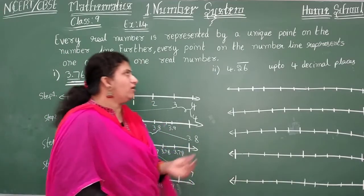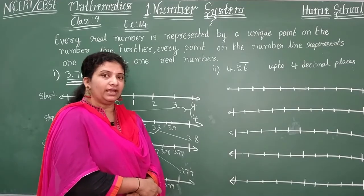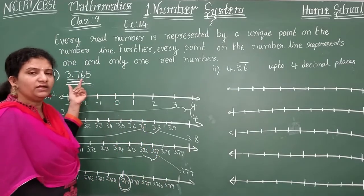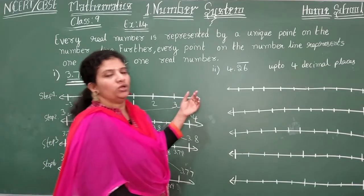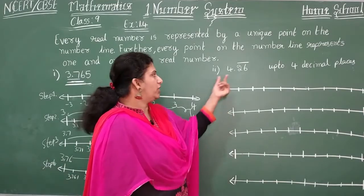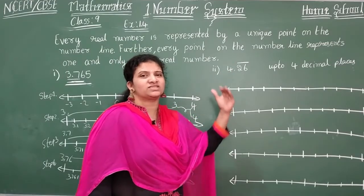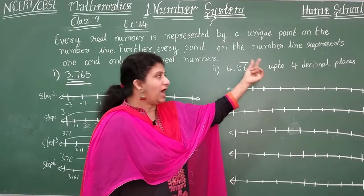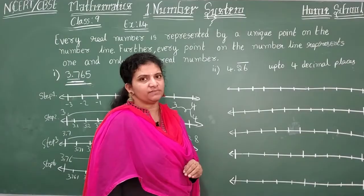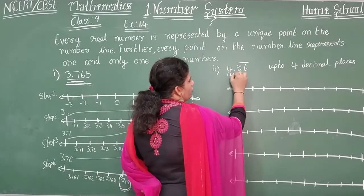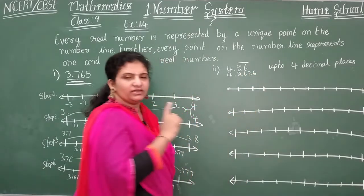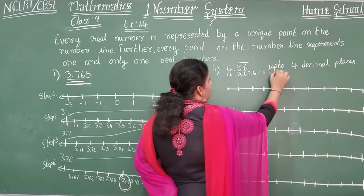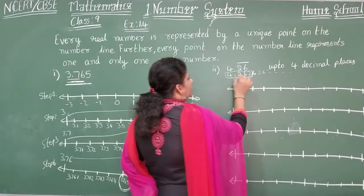Observe the next problem here children: 4.26 bar. What type of decimal is it? It is a non-terminating repeating decimal, whereas the first decimal 3.765 was a terminating decimal. Coming to this non-terminating repeating decimal, the answer is 4.262626262626... and so on. The question asks you to visualize 4.2626262626... and represent it on the number line. Up to 4 decimal places it is extending like this, but I need to mark this part on the number line.